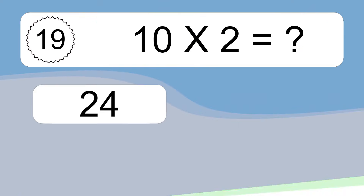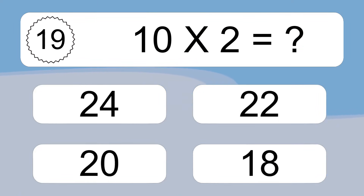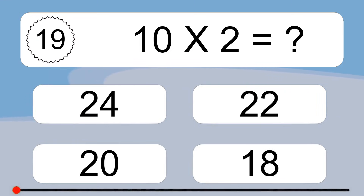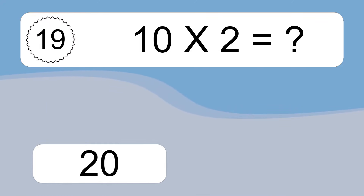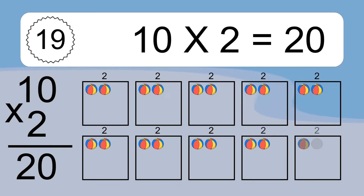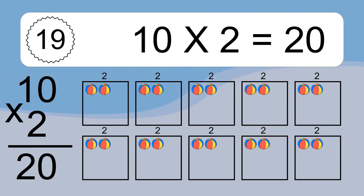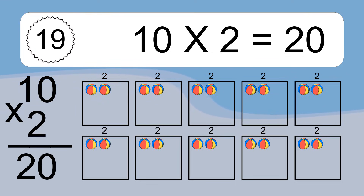10 times 2 equals what? 10 times 2 equals 20. We have 10 boxes, and each box has 2 colorful balls inside. If you count all the balls in all the boxes together, you will have 10 times 2 balls. This equals 20 balls.